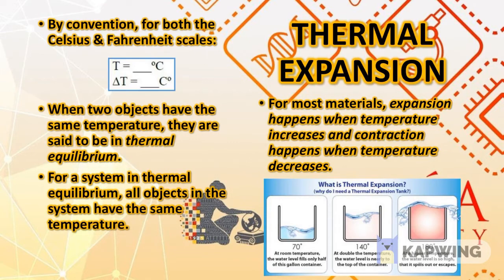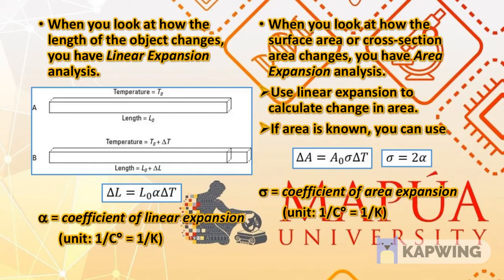For most materials — not all, but most — expansion happens when temperature increases, and contraction happens when temperature decreases. When an object expands, we can analyze the expansion in three ways: linear expansion (how the length changes), area expansion (how the surface area or cross-section area changes), and volume expansion (how the volume changes).